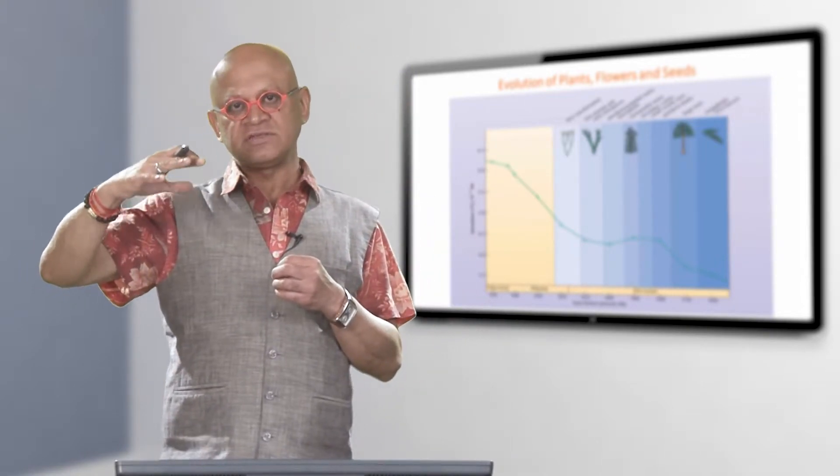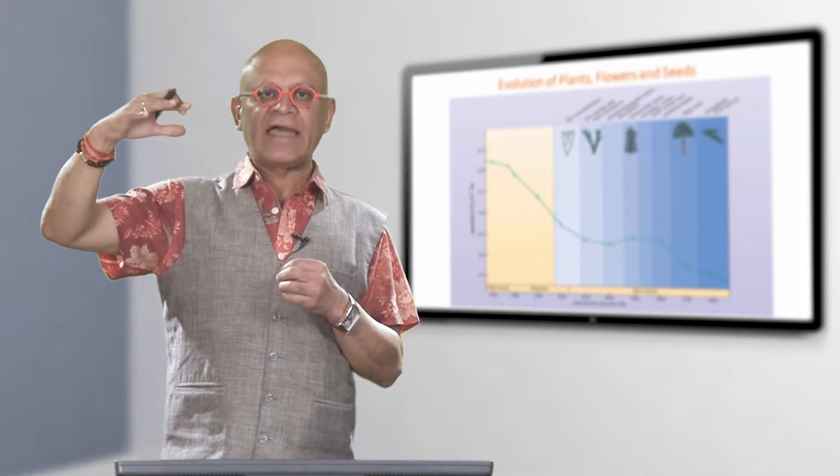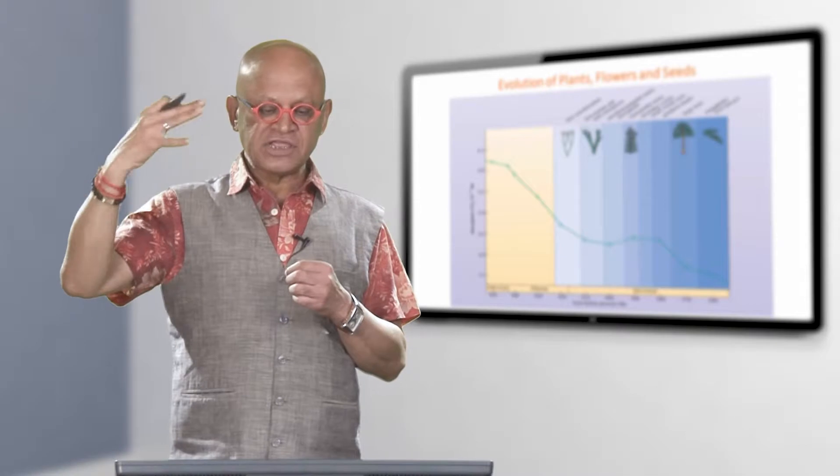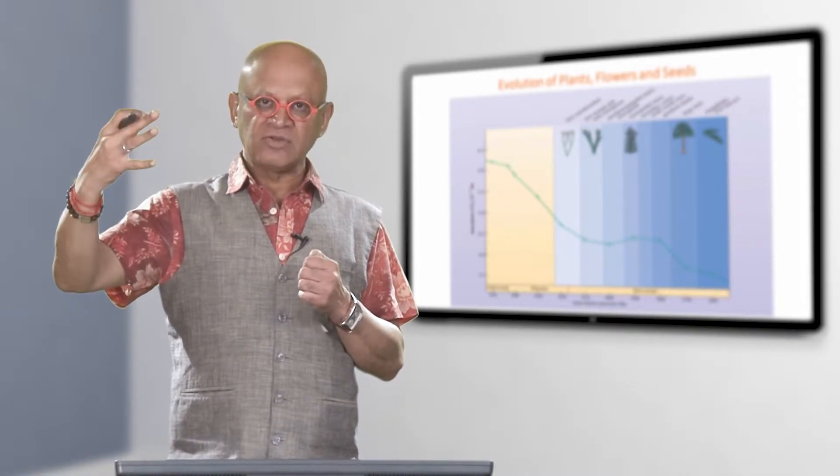Before photosynthesis became so abundant, you could not have had high levels of oxygen in the atmosphere. So photosynthesis became very abundant, oxygen began to increase.